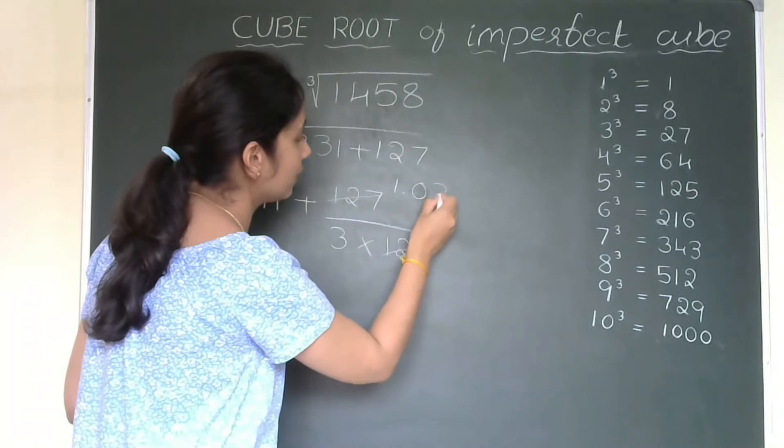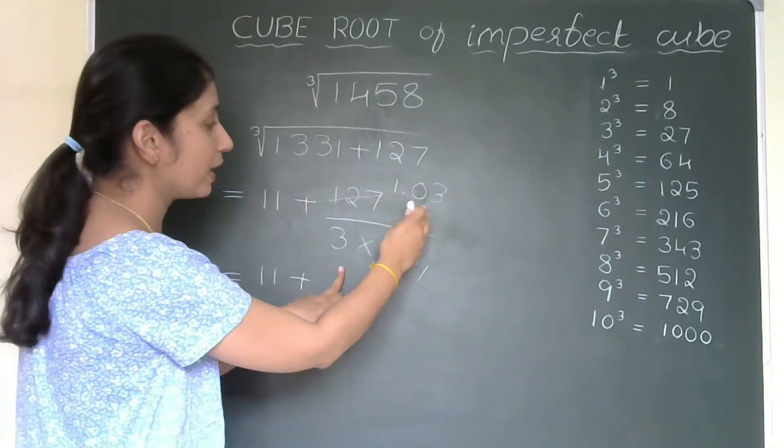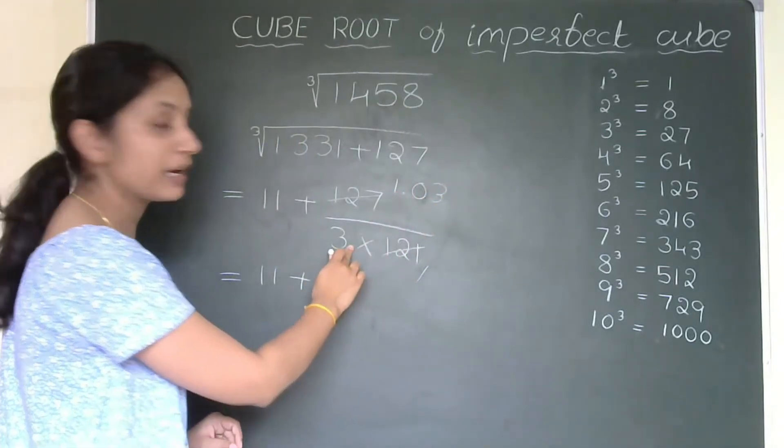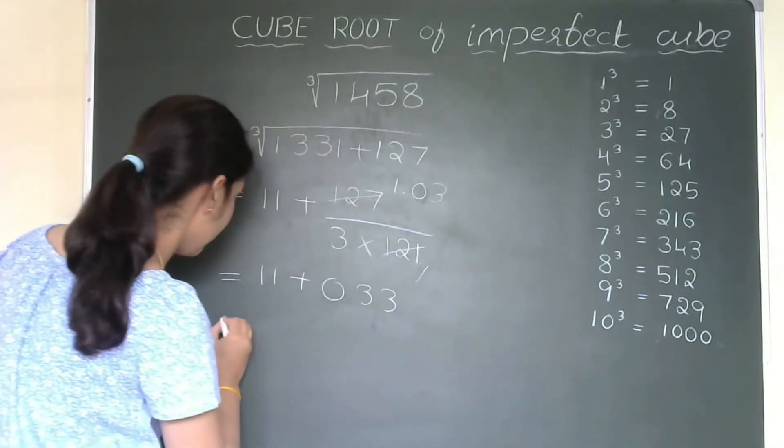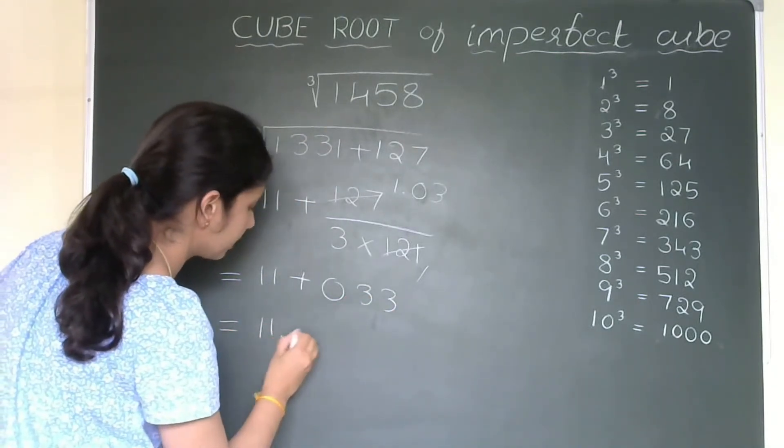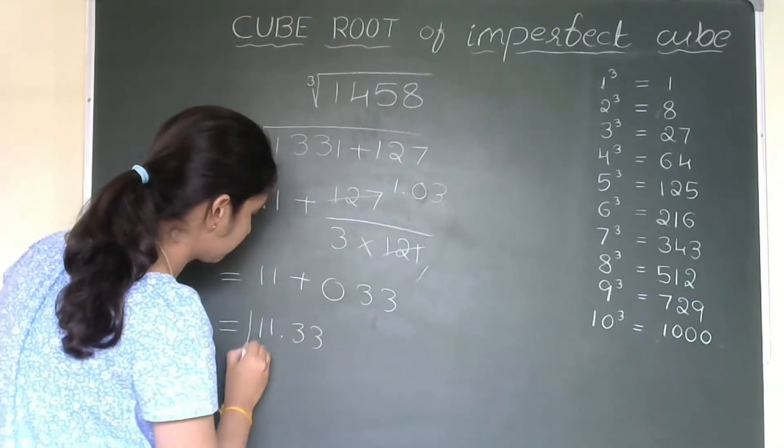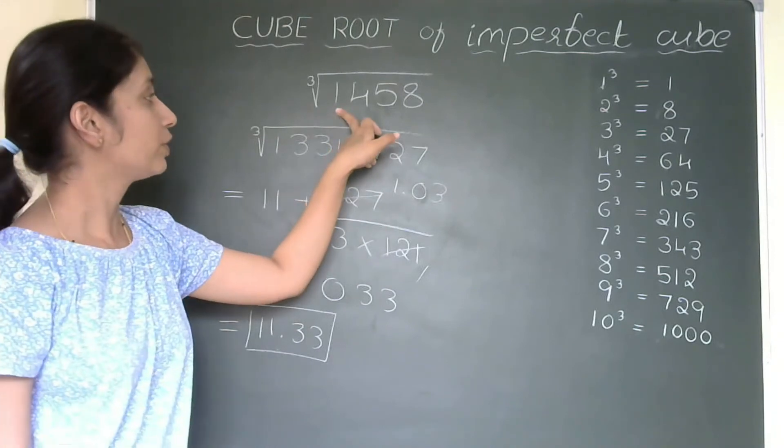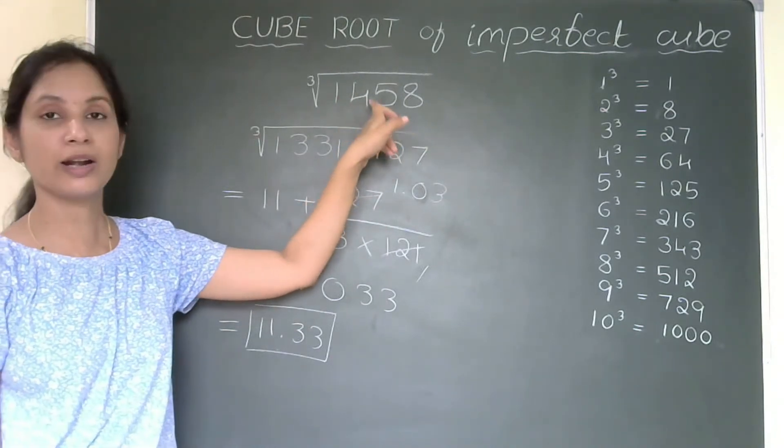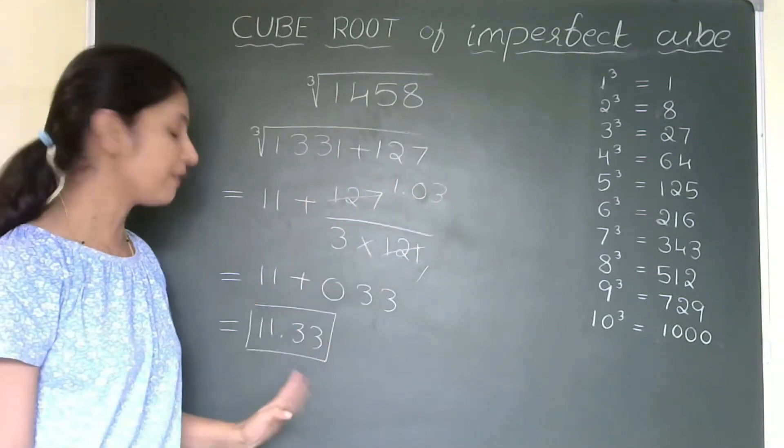121 one times is 121, so we get 03. So, that means 1 divided by 3 is 0.33. So, my answer is 11.33 is the approximate answer. Please cross check cube root of 1458 is 11.33.